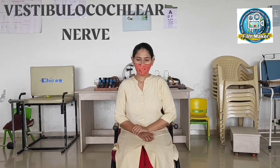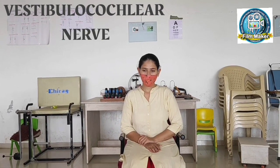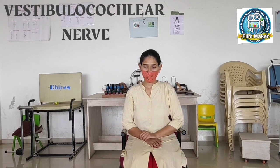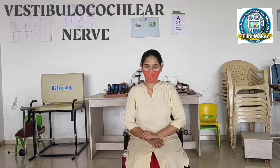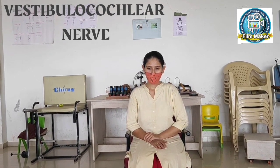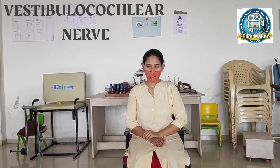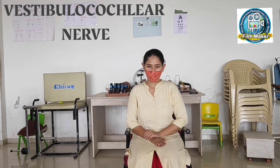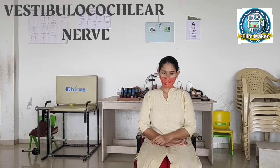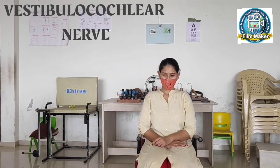For Rinne's test, patient is in sitting position. We can use a 256 or 512 Hertz tuning fork. Strike the tuning fork and place it on the patient's mastoid process. The patient has to inform once they stop hearing the buzzing sound. The fork is then immediately moved in front of the external auditory meatus to find out whether they can still hear the sound or not. Normally, air conduction is greater than bone conduction, so sound should be audible in the second step. In conductive deafness, bone conduction is greater than air conduction, and in nerve deafness, both are impaired.